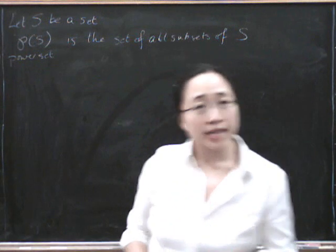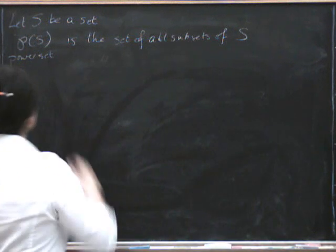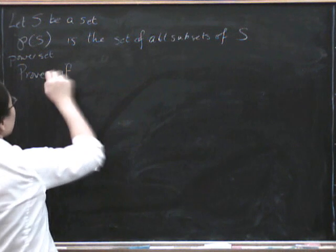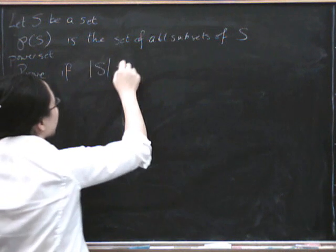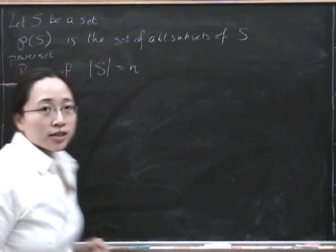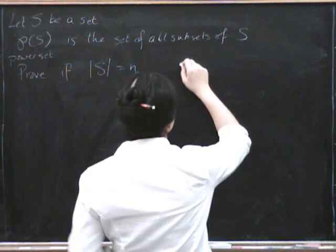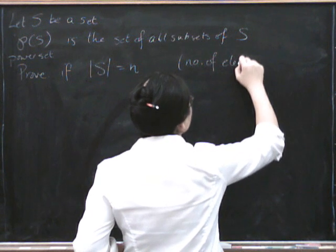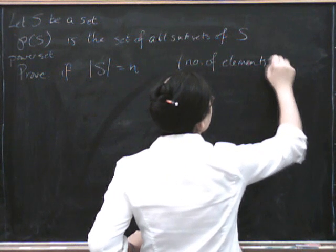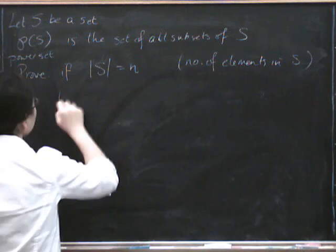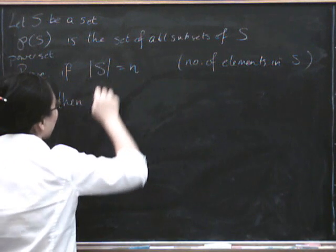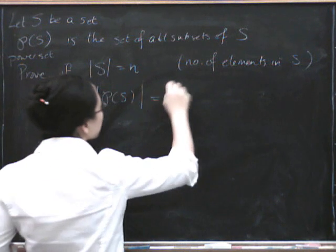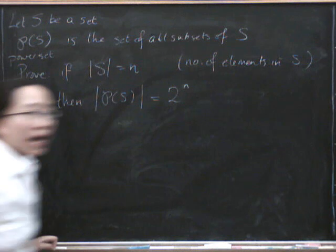There was a video about this in the sets series, and what we're going to prove is that if S has n elements in it, so when we put these fences on either side of S, that's the number of elements in S. Then the question is, how many subsets are there? And the answer is 2 to the power of n.